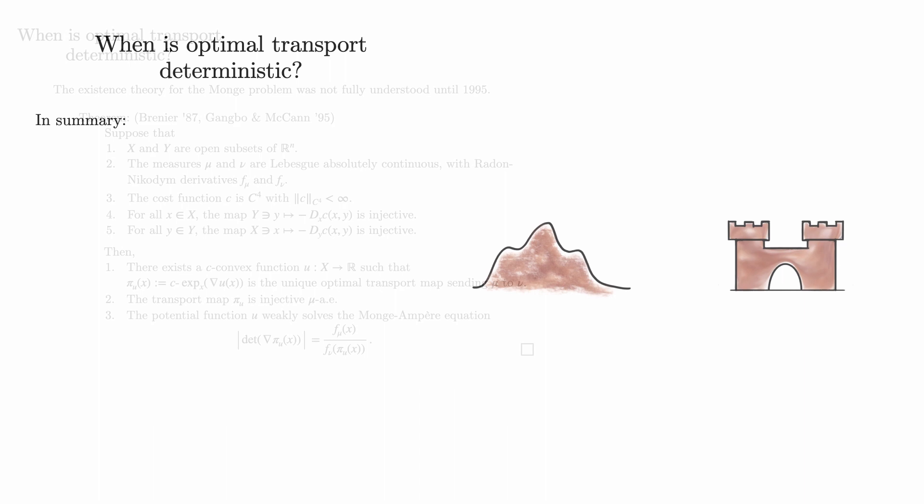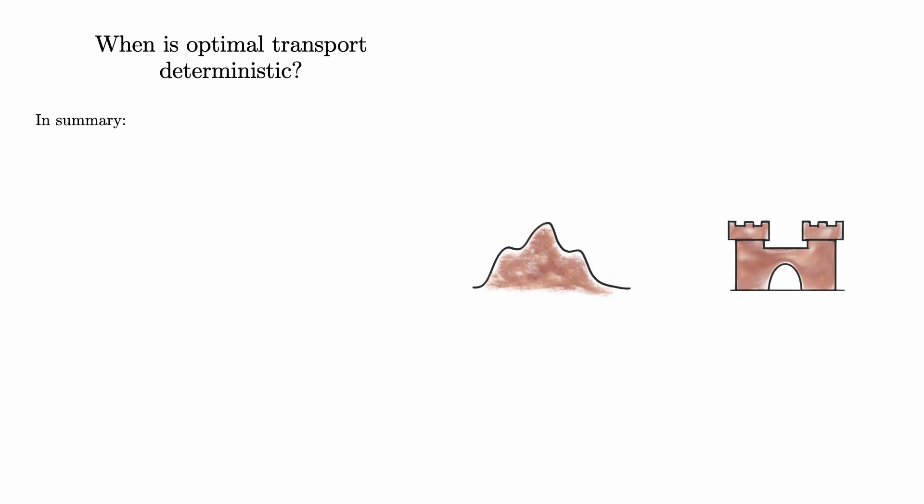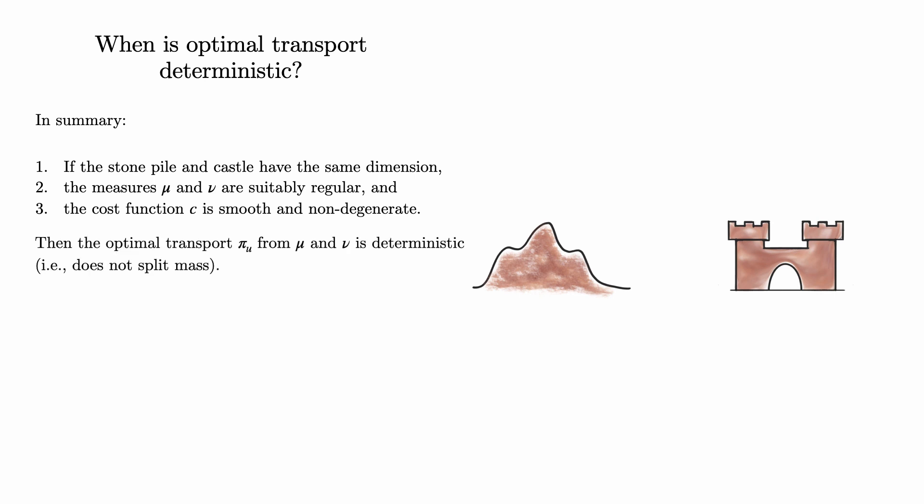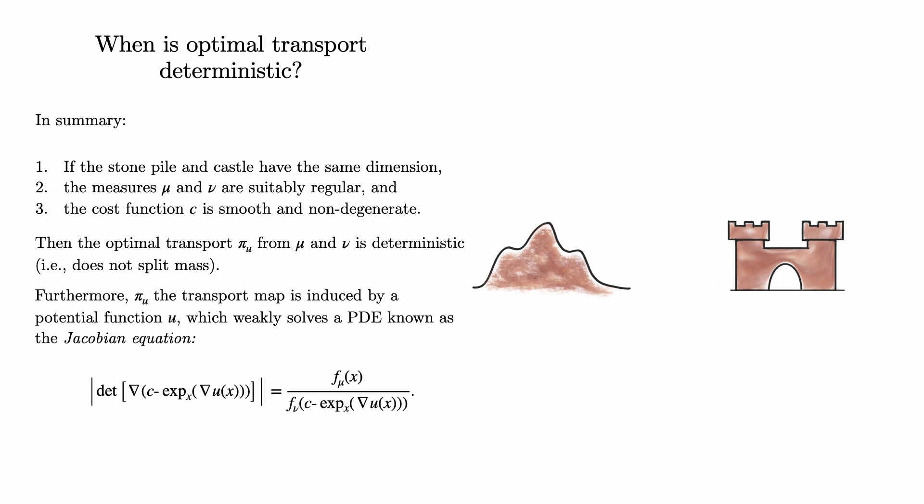In the context of Monge's original question, it's possible to give an intuitive explanation for what it says. If the stone pile and castle have the same dimension, the measures mu and nu are suitably well behaved, and the cost function c is smooth and non-degenerate, then the solution to the Kantorovich problem is actually a solution to the Monge problem. In other words, it does not split mass. Furthermore, the transport is given by the c subdifferential of a potential function u, which satisfies a particular PDE known as the Jacobian equation.